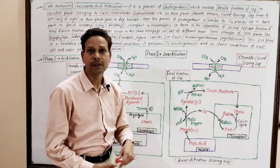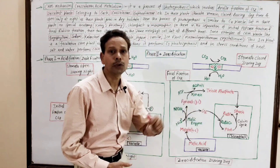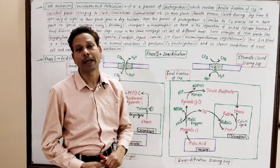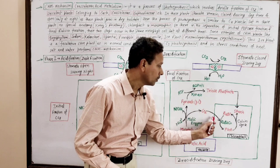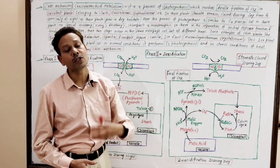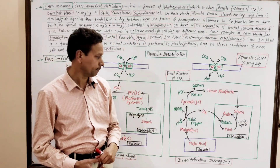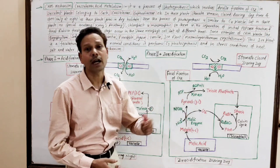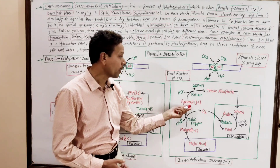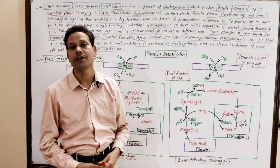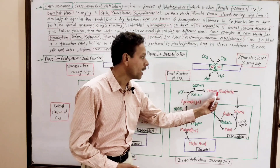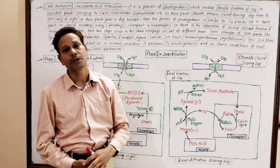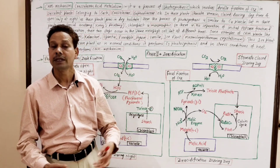The Calvin cycle produces starch. The malate yields CO2, which is fixed by RuBisCO to generate the Calvin cycle. The malate also produces a 3-carbon compound — pyruvate. This pyruvate undergoes phosphorylation to produce triose phosphate, and this triose phosphate enters the chloroplast to be converted into starch.